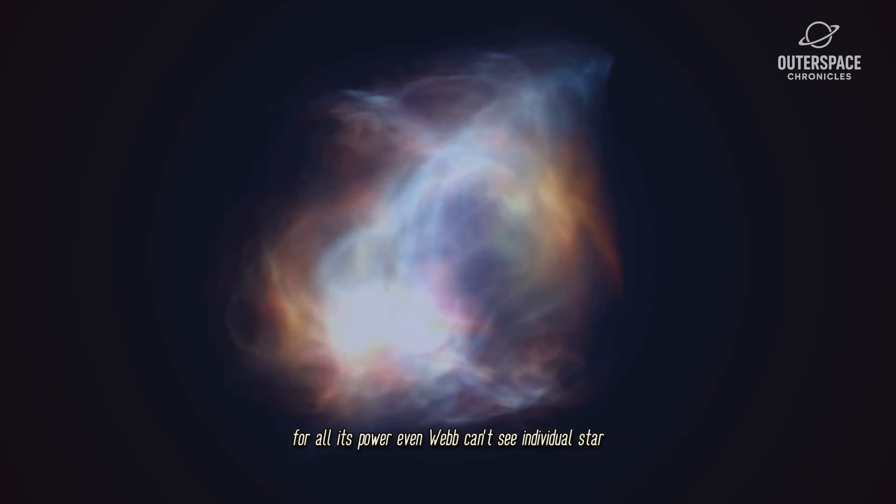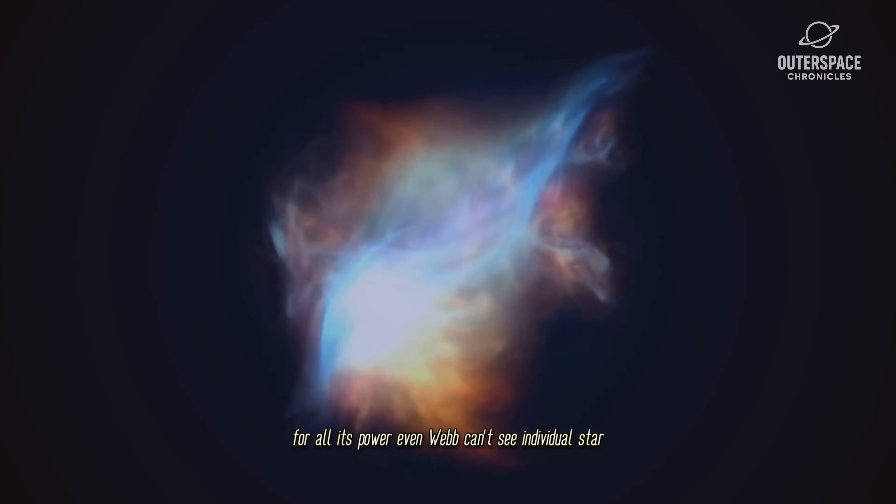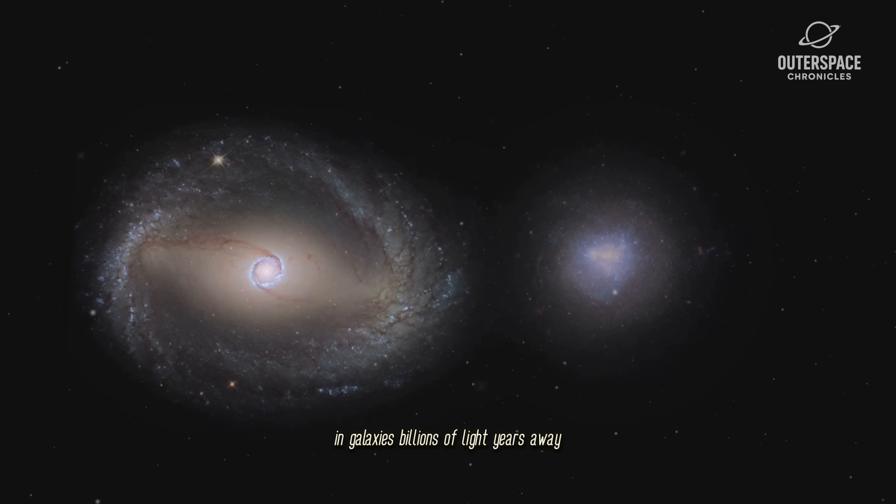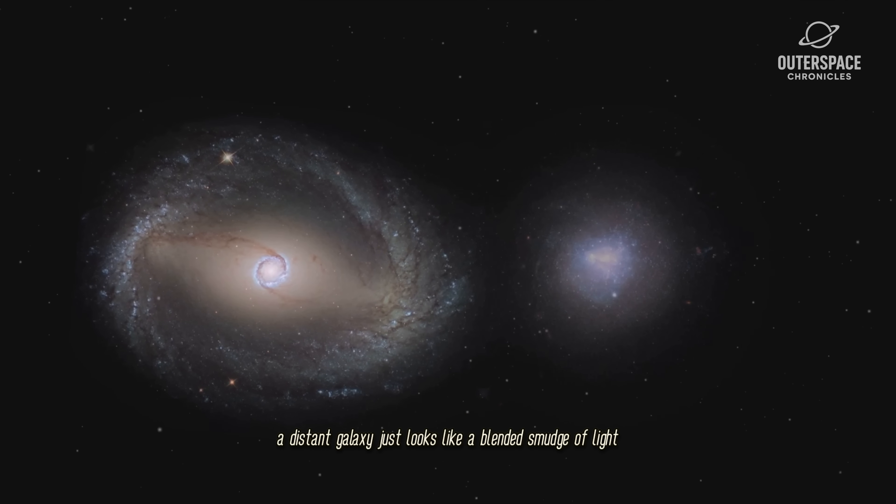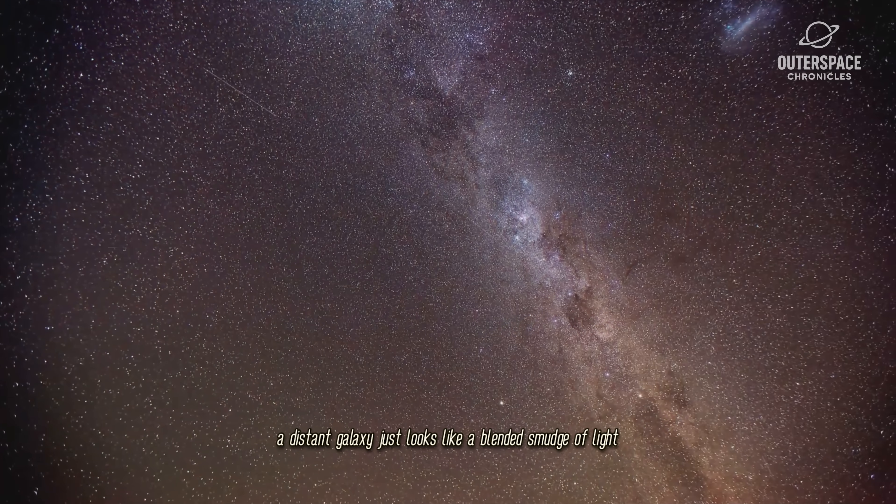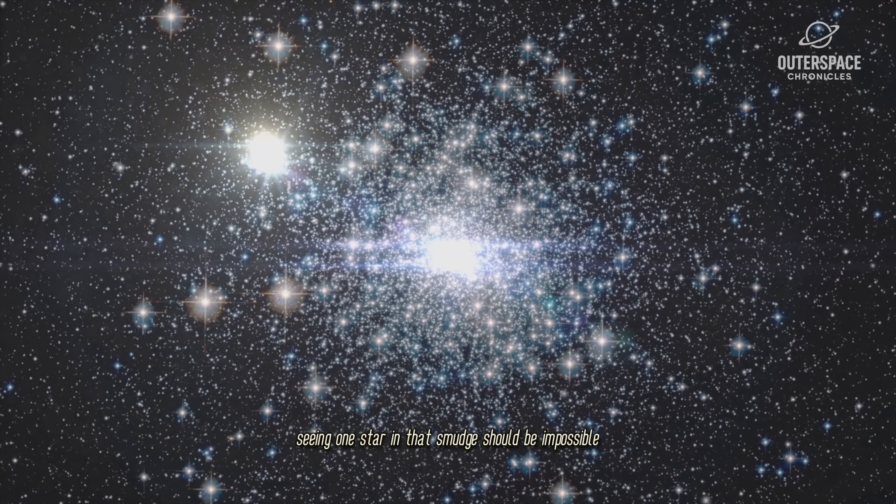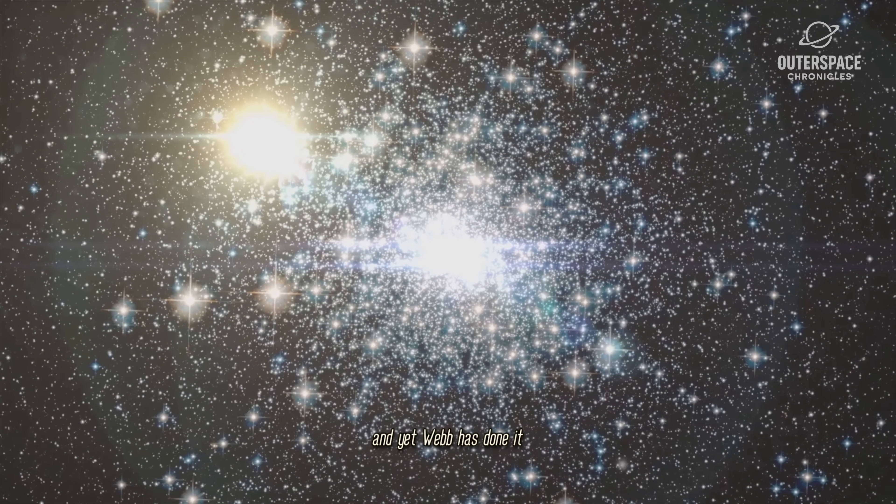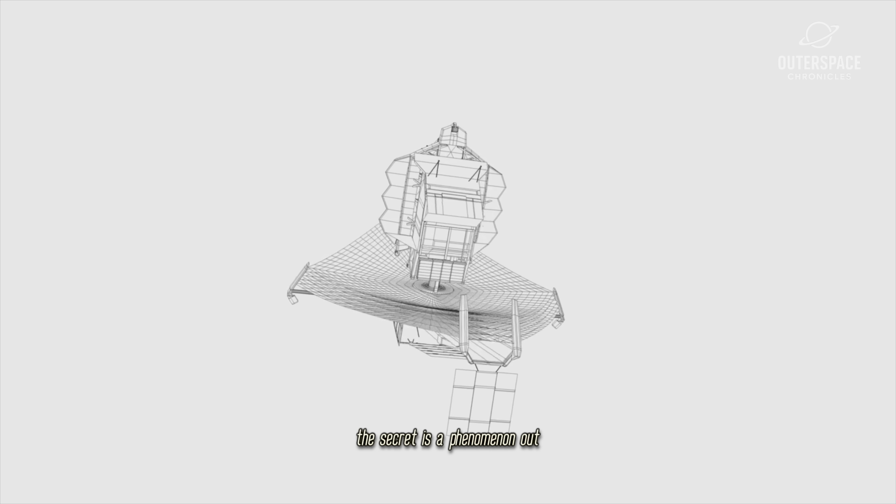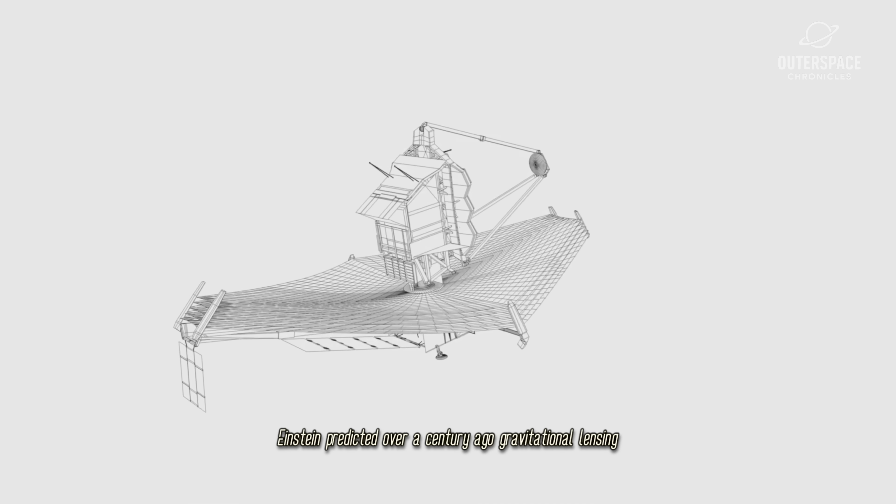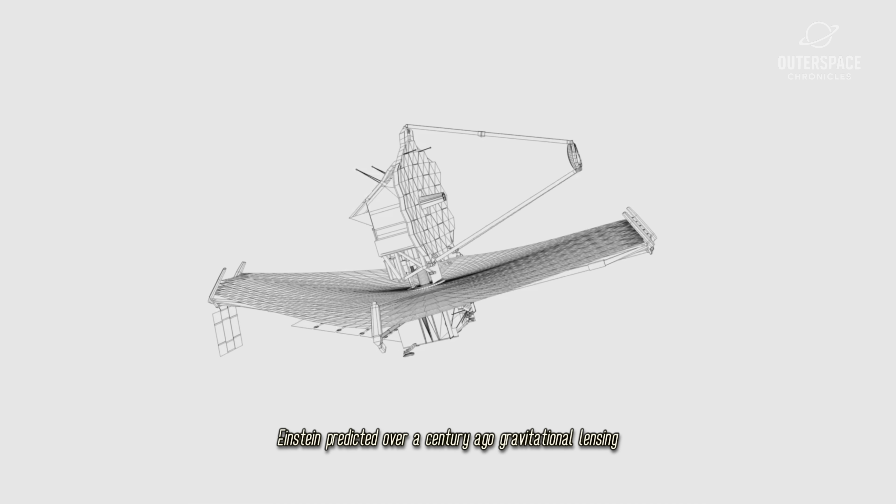For all its power, even Webb can't see individual stars in galaxies billions of light years away. A distant galaxy just looks like a blended smudge of light. Seeing one star in that smudge should be impossible. And yet, Webb has done it. The secret is a phenomenon Albert Einstein predicted over a century ago. Gravitational lensing.